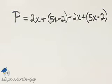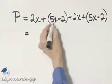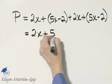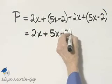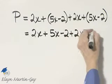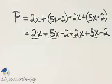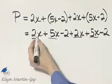Let's see if we have any like terms to combine. Notice this is all addition, but I'll take off the parentheses and then combine our like terms. Here I have 2x, 5x, 2x, and 5x. Those are all like terms.